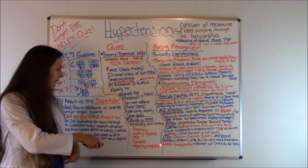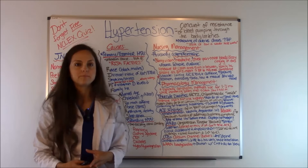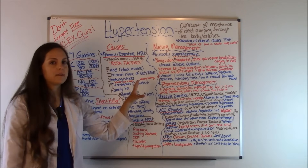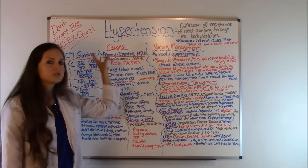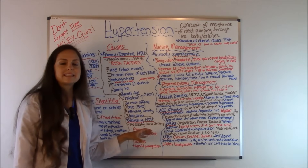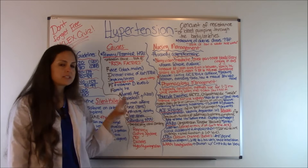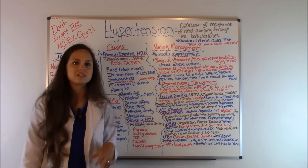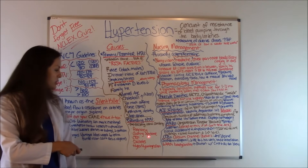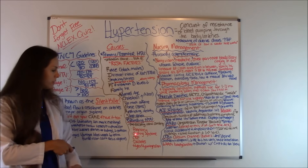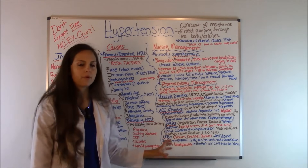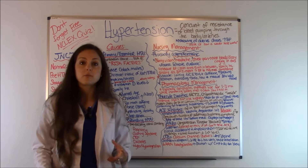With primary/essential hypertension, the cause is idiopathic — you just look at the risk factors. With secondary hypertension, a pre-existing condition is causing it. Typical conditions that can cause secondary hypertension include pregnancy, Cushing syndrome, chronic renal failure, diabetes, and hypo- or hyperthyroidism.